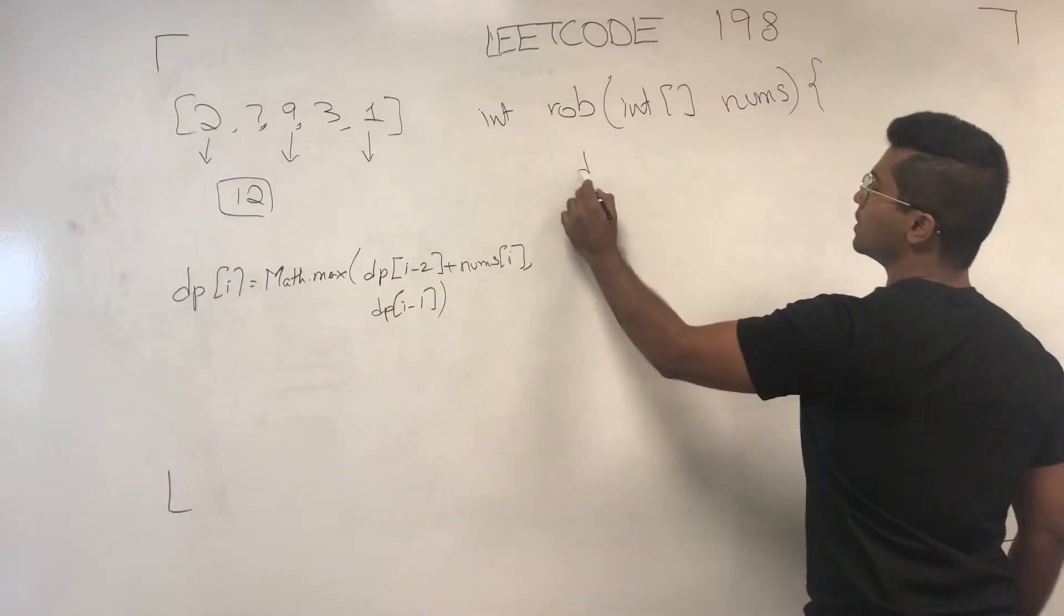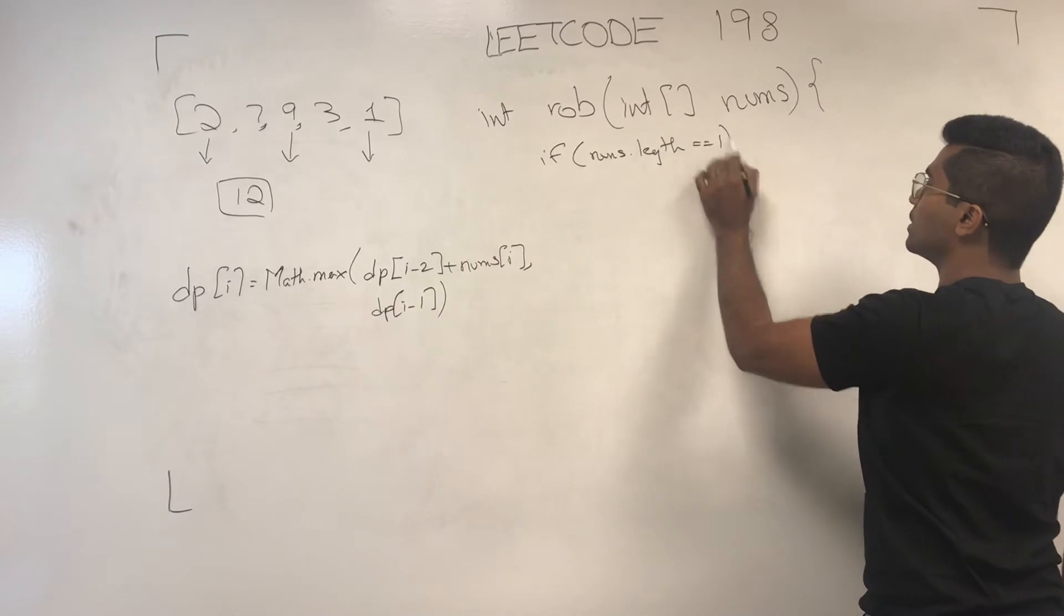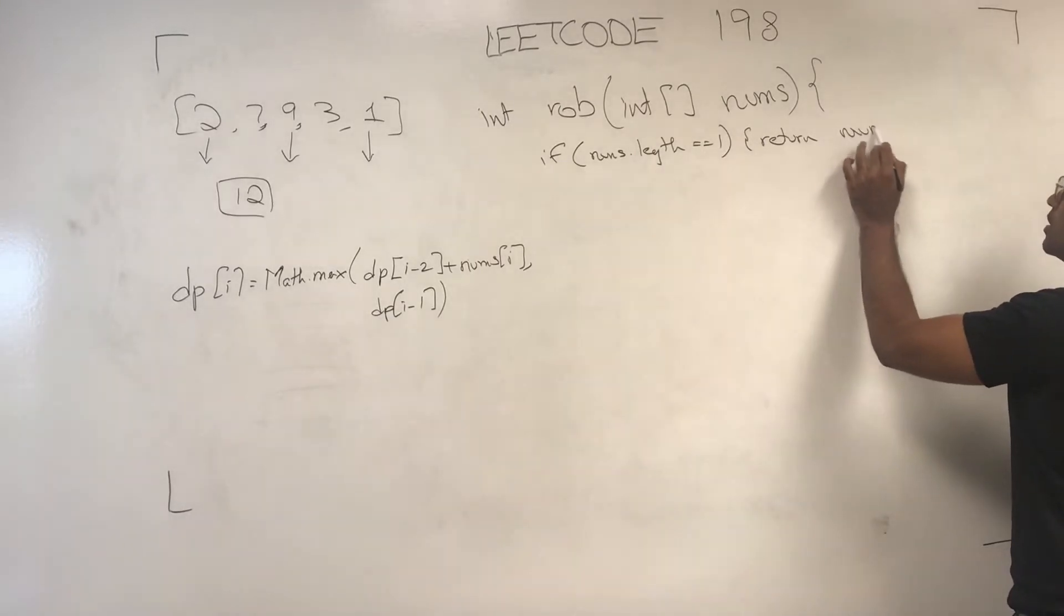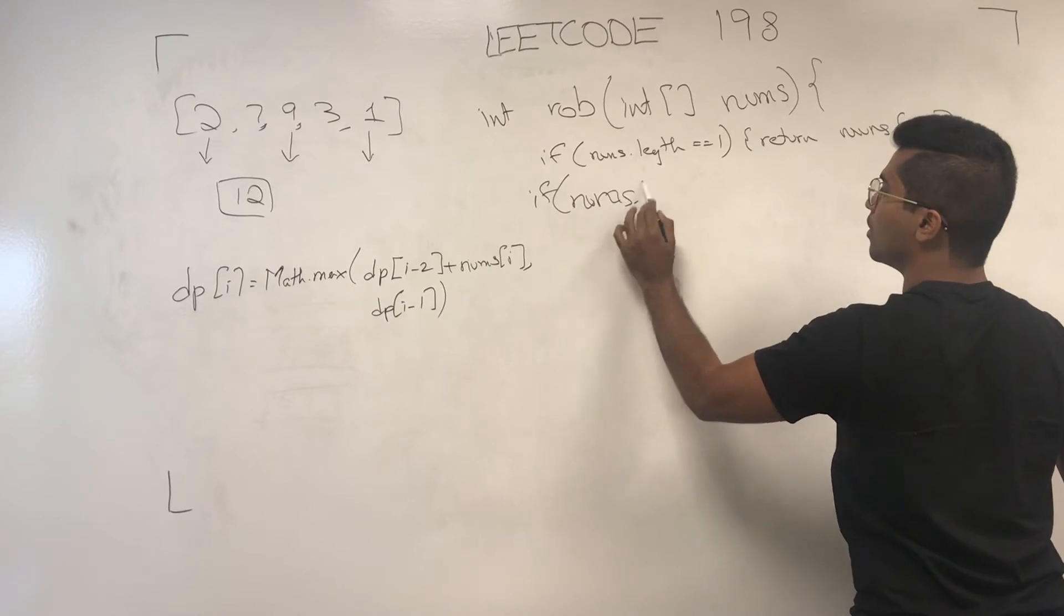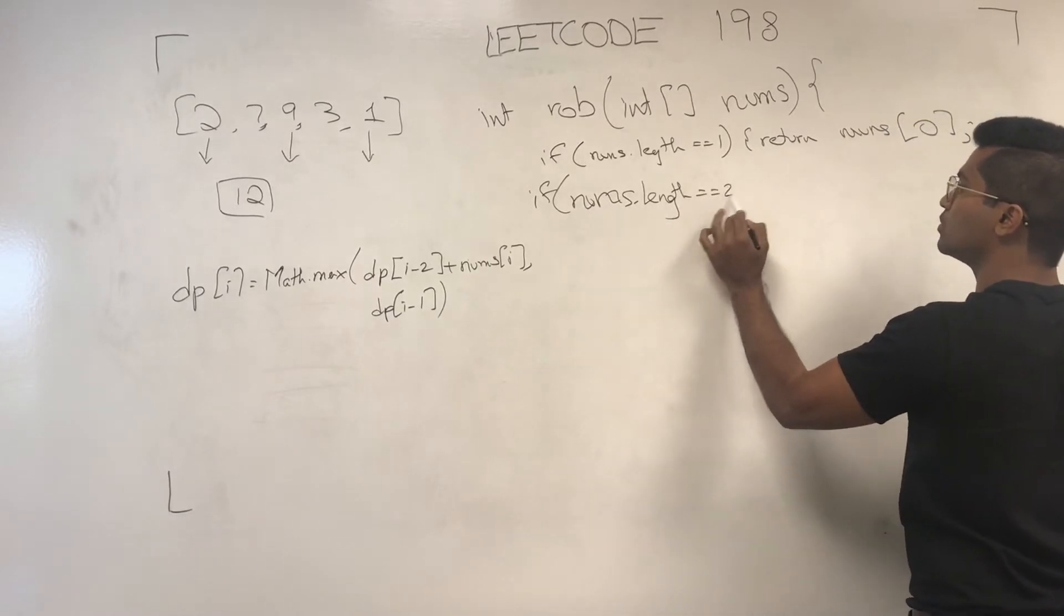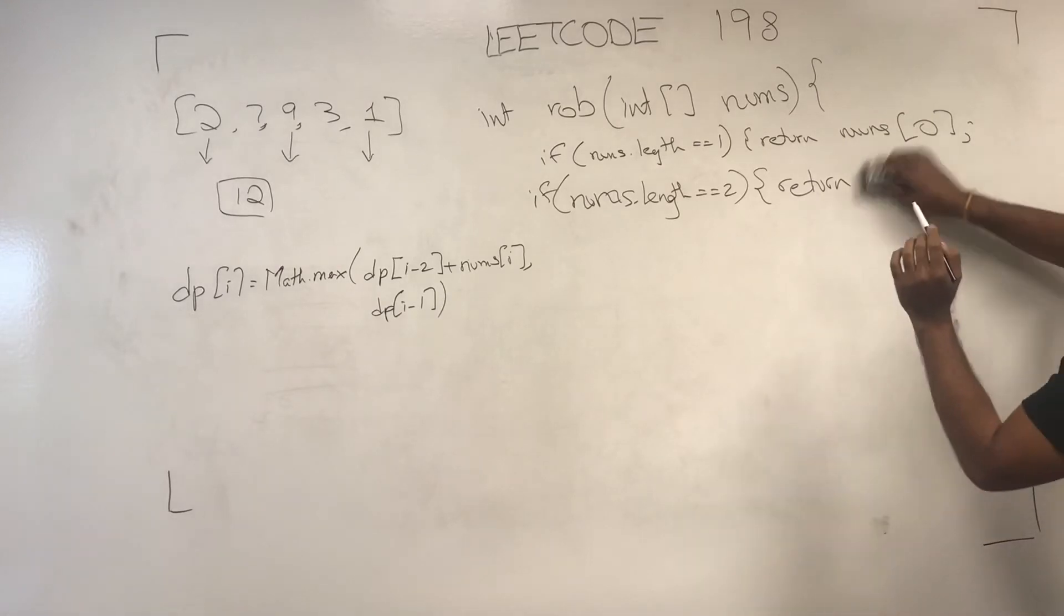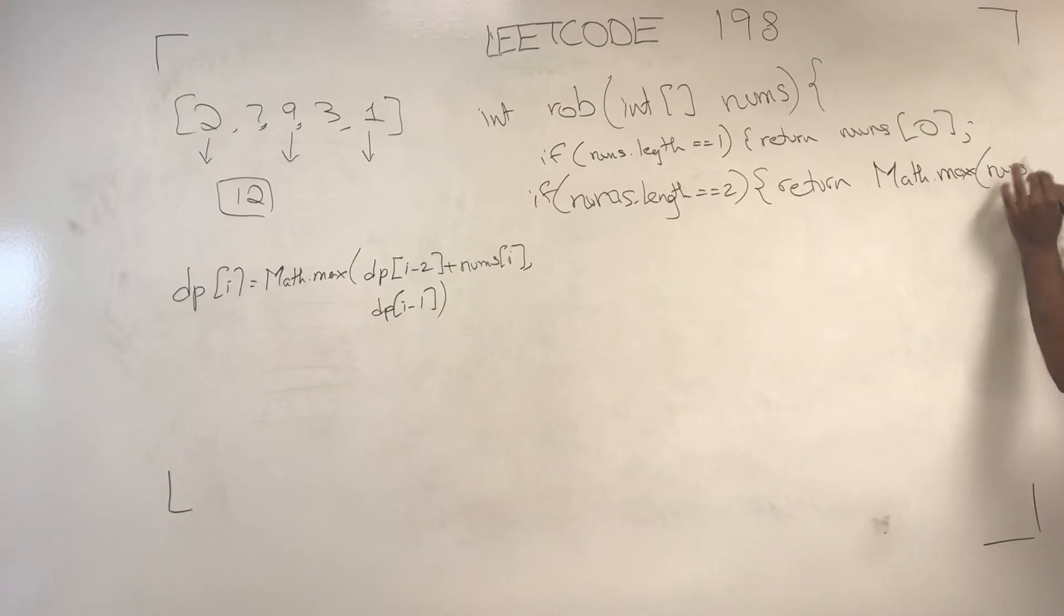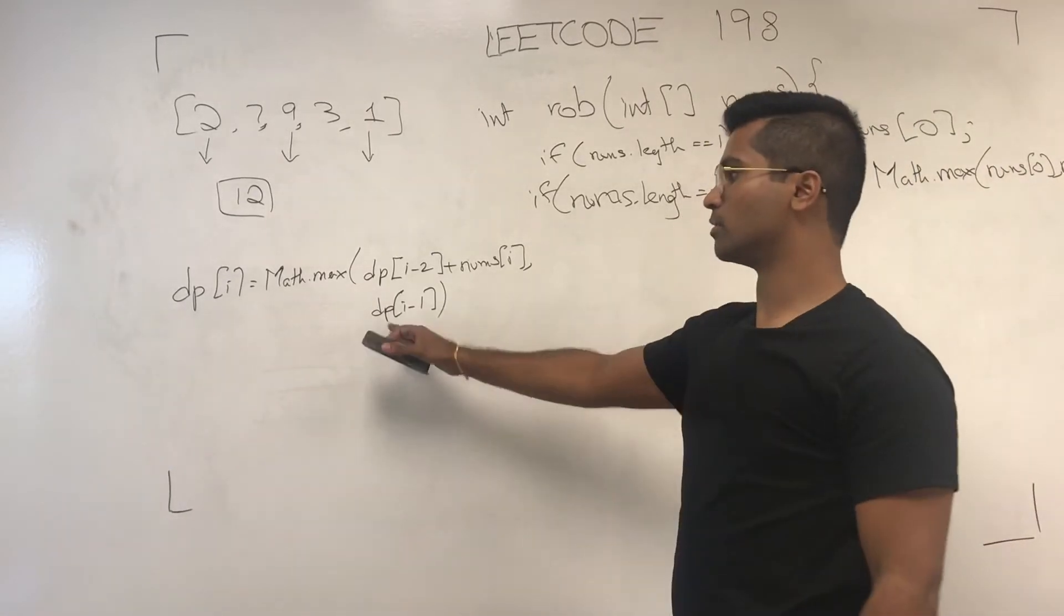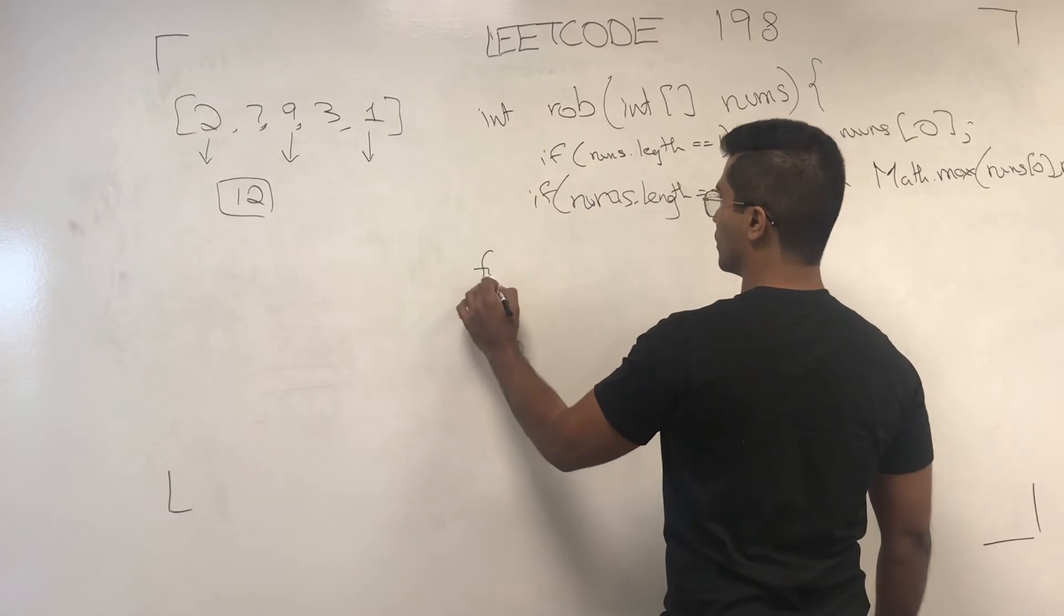So let's get into how it's solved. If nums.length is 1, return nums of 0. If nums.length is 2, return whichever one is more because we can only rob one house.